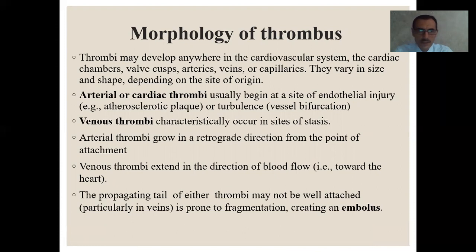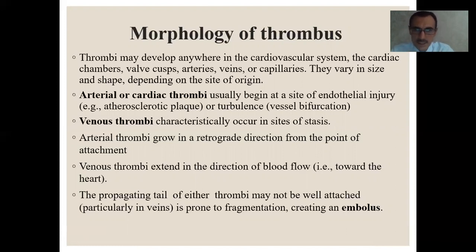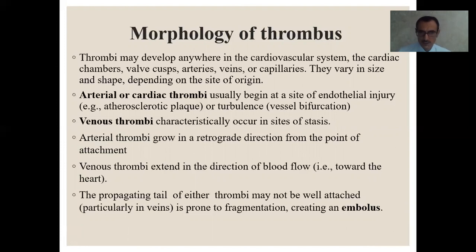Thrombi may develop anywhere in the cardiovascular system — in the cardiac chambers, valves, arteries, and veins. Thrombi usually begin at the site of endothelial injury, for example in arteries. The propagating tail of thrombi may not be well attached, particularly in veins, and is prone to fragmentation, creating an embolus.